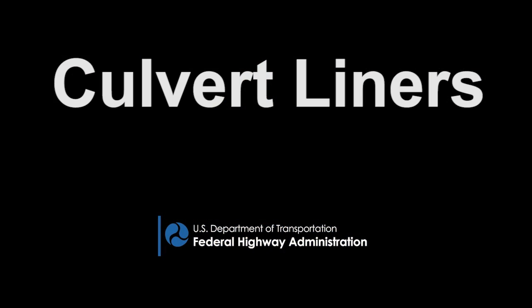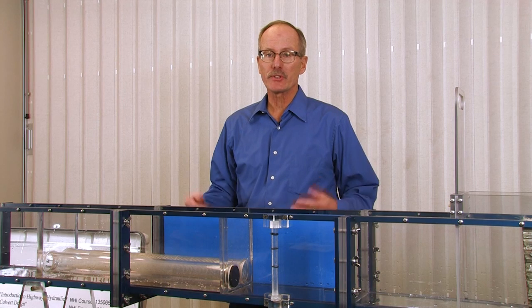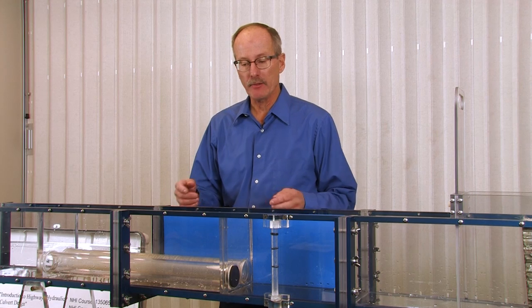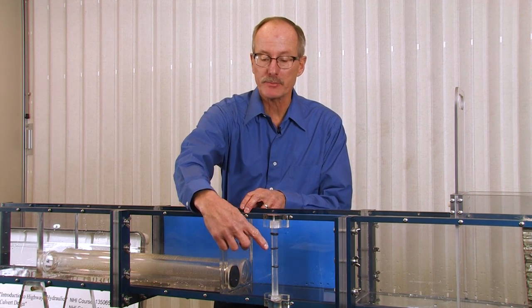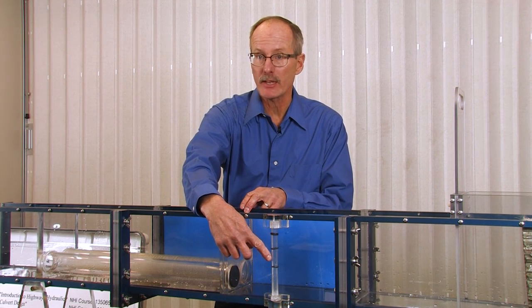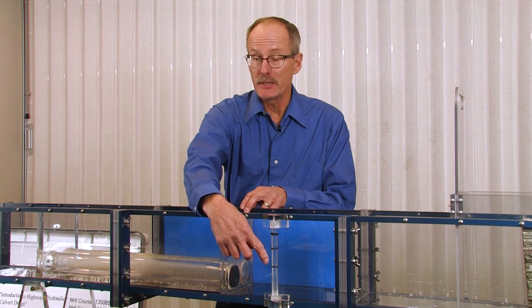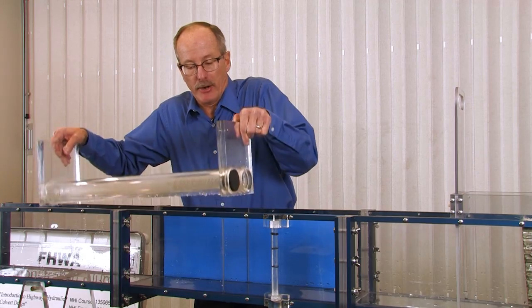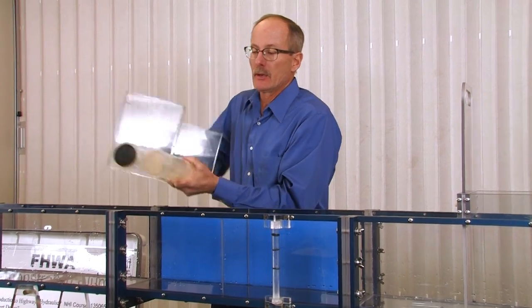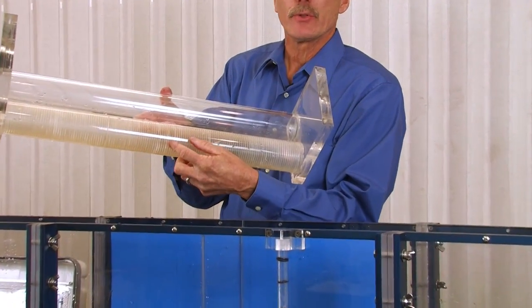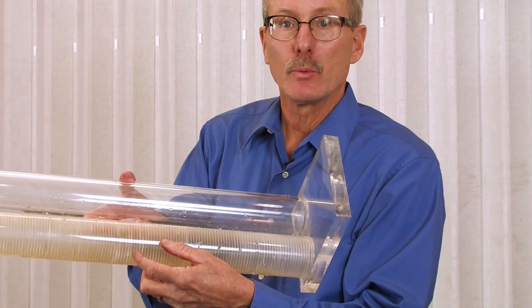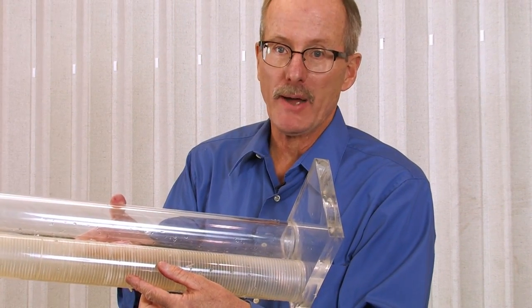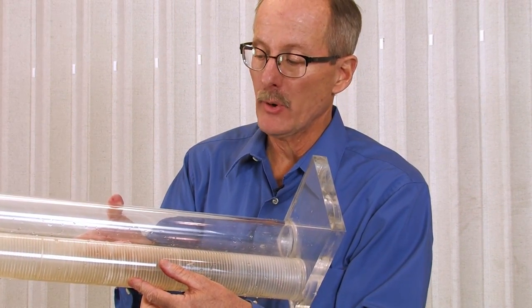This video will demonstrate the effects of liners on culvert performance. The purpose of the video is to see how a liner changes hydraulic performance primarily by looking at the change in headwater that will be detected by our stilling well. I have for the model a double barrel culvert. We'll only be using the rough barrel side, which simulates a corrugated metal pipe with an n value of 0.024. So I have a plug in the smooth barrel side.